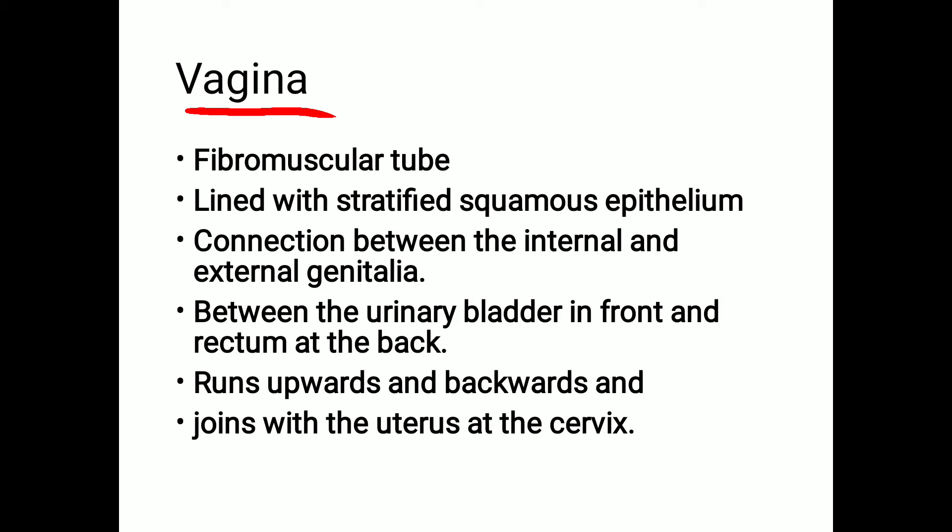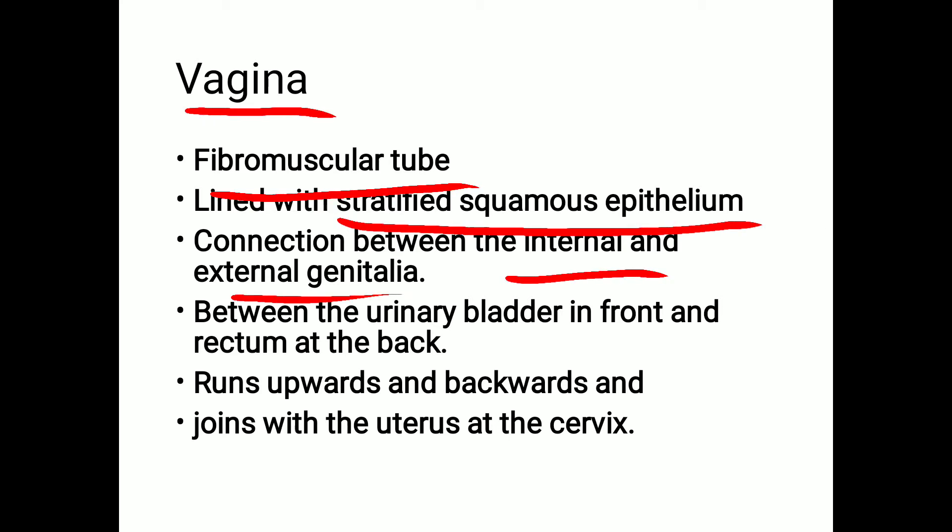The vagina is a fibromuscular tube, made of fibrous tissue and muscle. It is lined with stratified squamous epithelium. The vagina is the connecting link between the external genitalia — the vulva — and the internal genitalia, which includes the uterus, uterine tubes, and ovaries.